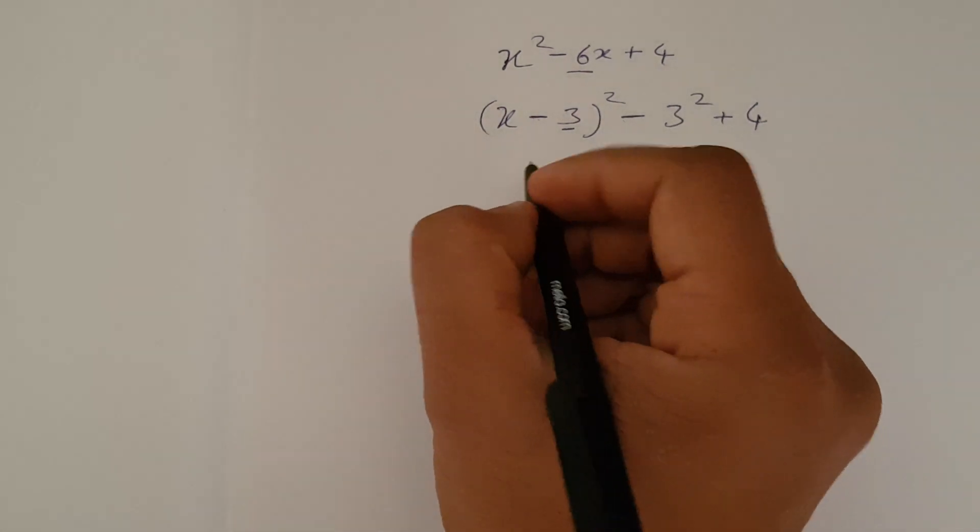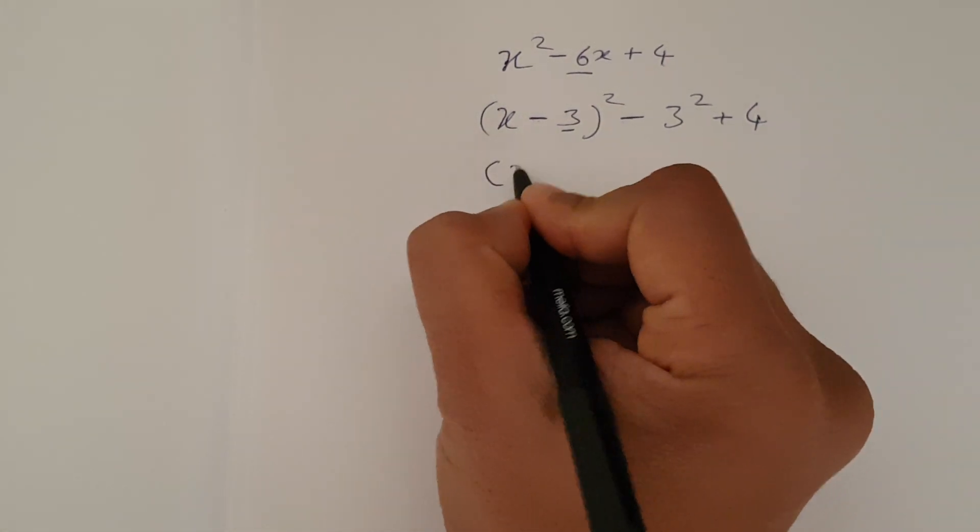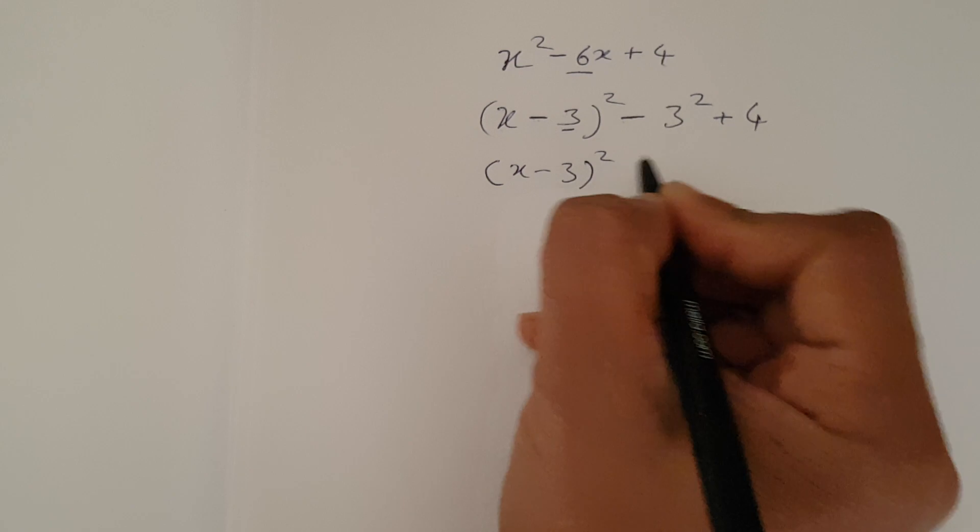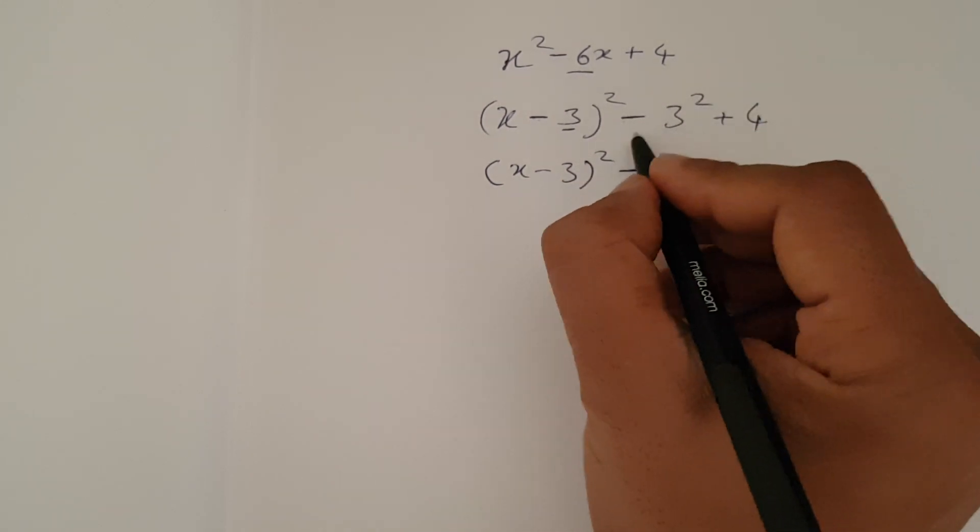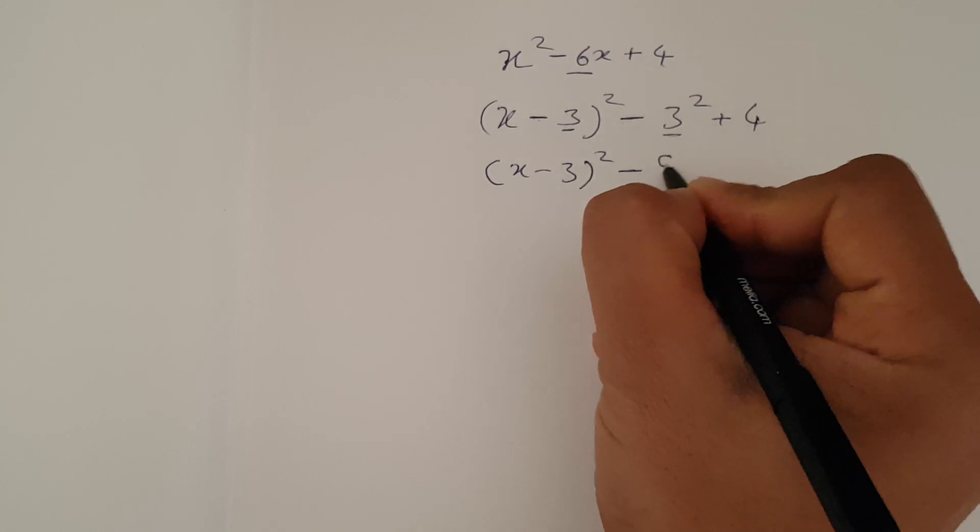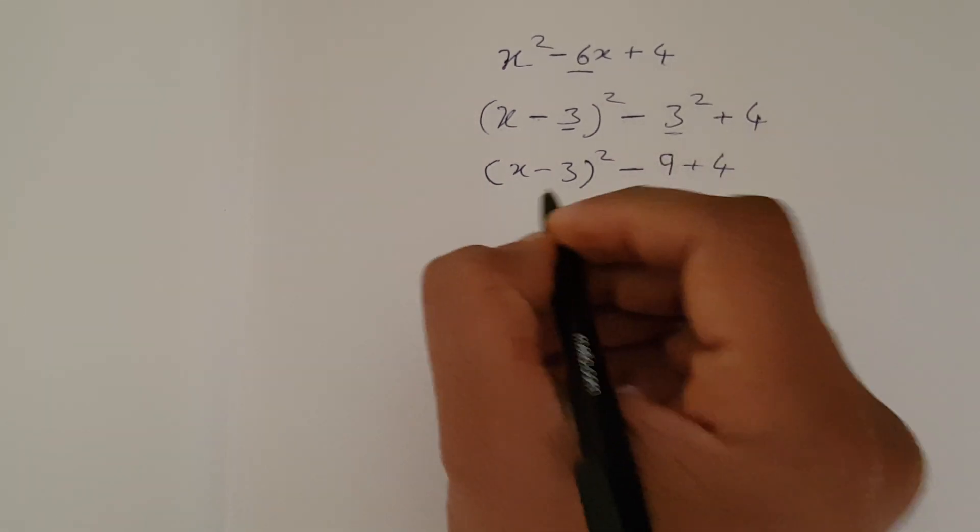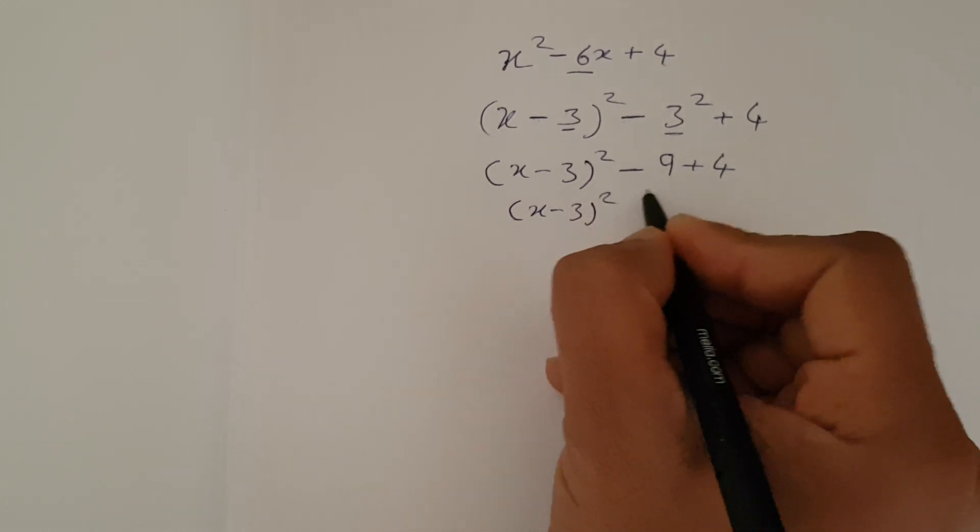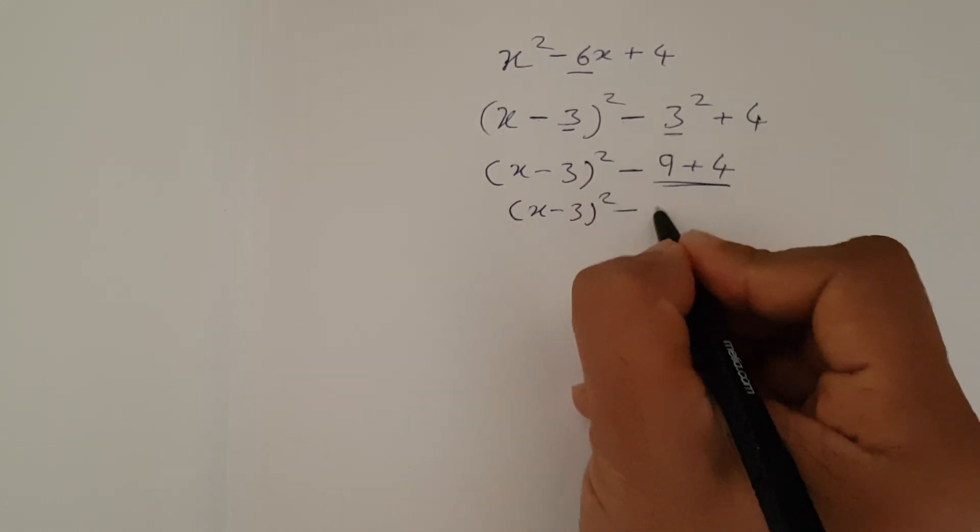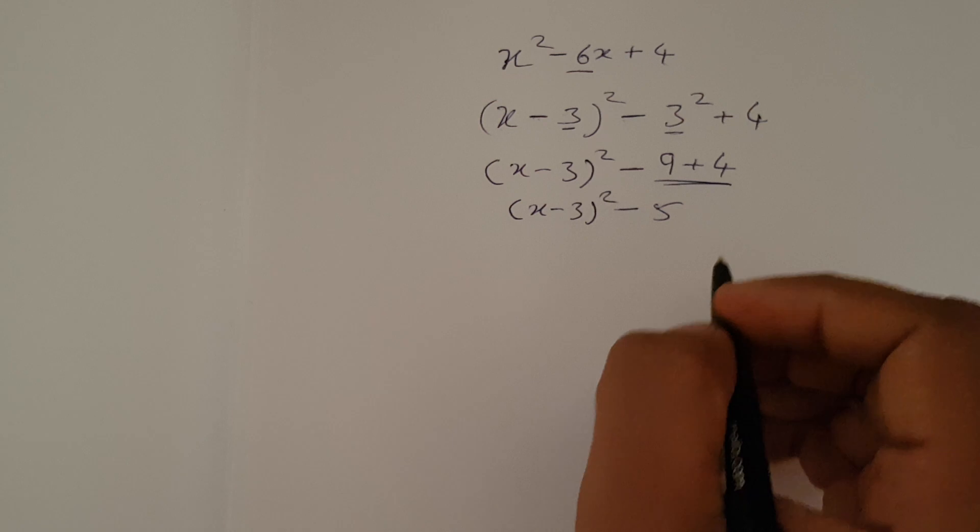Now, just finish it off. So x minus 3 whole square minus 3 square, not minus 3 square, just 3 square, which is 9 plus 4. And x minus 3 whole square minus 5. That's it. That's your completing the square.